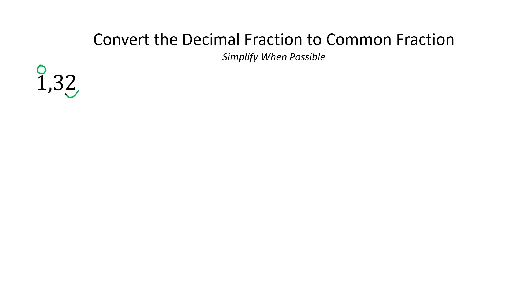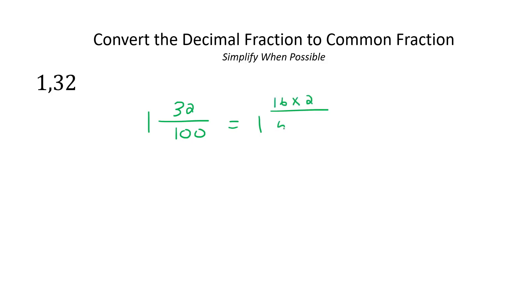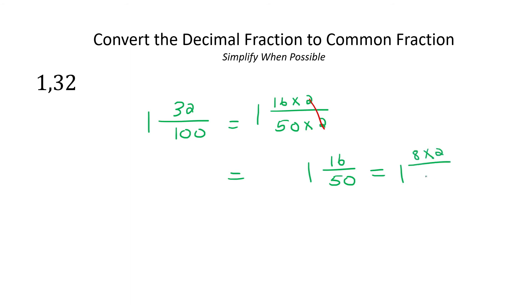Now here we have a mixed number, so just ignore it — pretend there was a zero here. So now just look at the .32: that's two decimals, so you're going to say 32 over 100. And then this little one that we had here, just let it sit in the front. Now we simplify: 32 can be written as 16 times two, and 100 as 50 times two, so the twos cancel. We then have one and 16 over 50. That can still be broken down: 16 is eight times two, and 50 is 25 times two, so those cancel, leaving one and eight over 25.